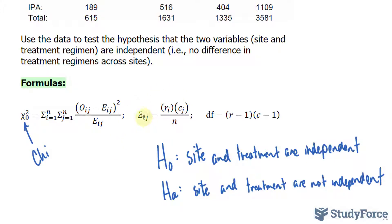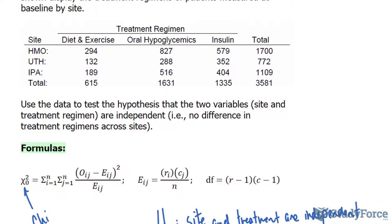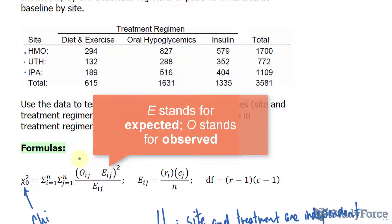Looking at this formula, we have the subscript i and j. i represents the row, and we have three rows: one, two, three. And we also have three columns: one, two, and three. This means that we will have nine e-values that we'll be using to calculate our chi-square value.